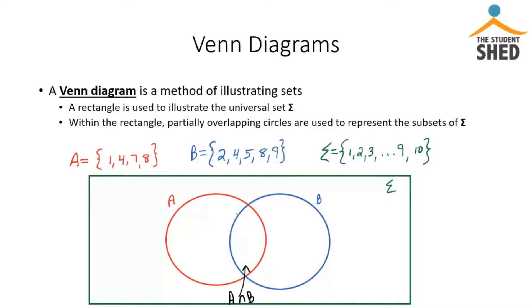So let's fill this out. Let's start with set A. Set A contains 1 as an element and it's not in set B. So we'll put that over here in the part of the circle that is only for set A.